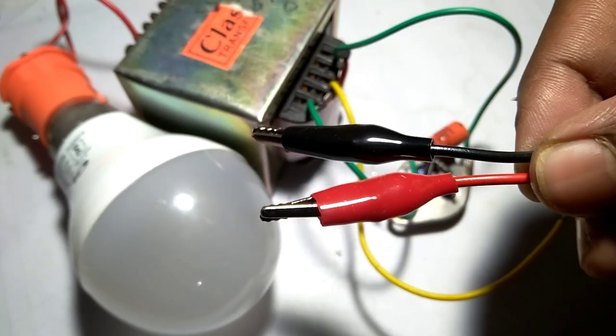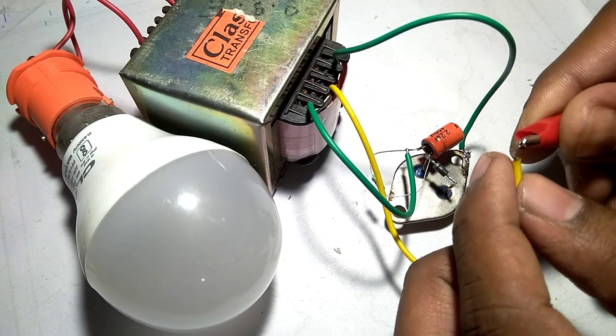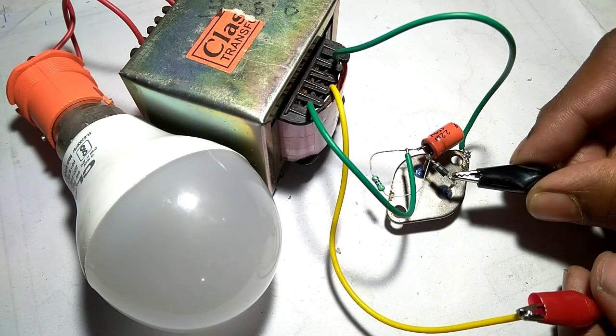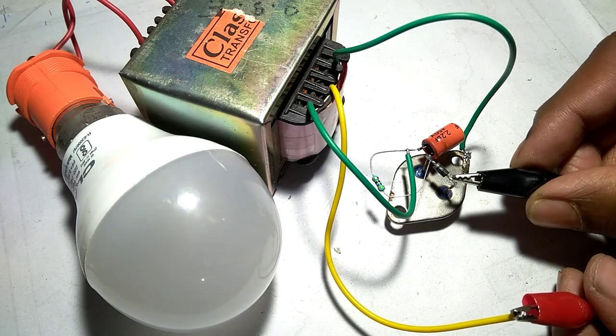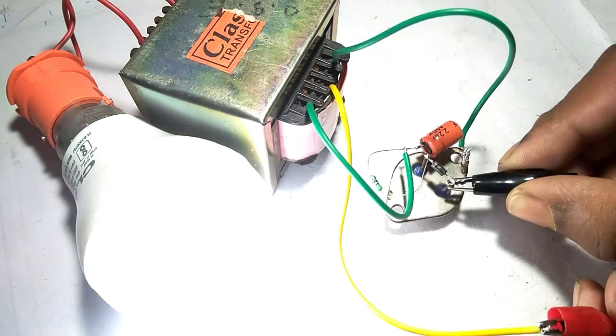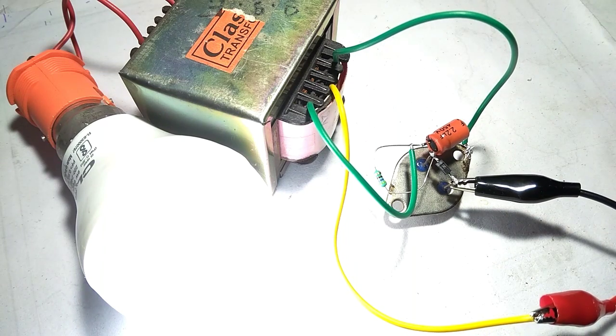Then the power source - we need a 12 volt power source. Connect the positive to transformer zero and connect the negative to transistor emitter pin. You can see the LED glows and the circuit works properly.